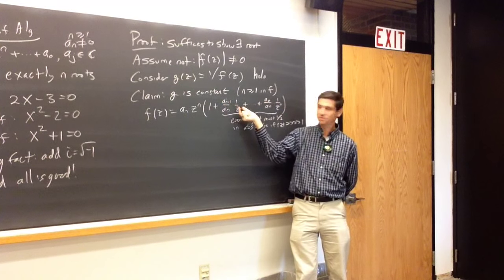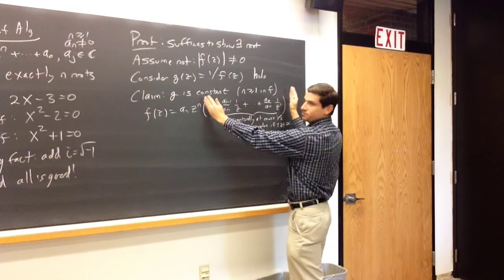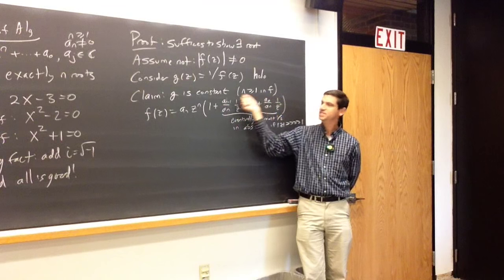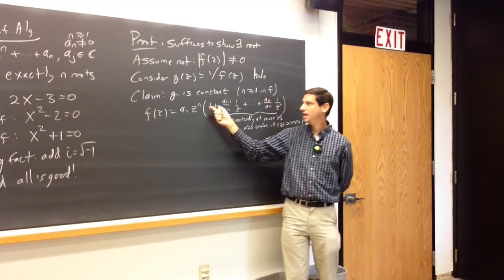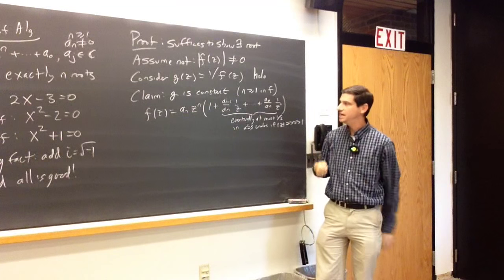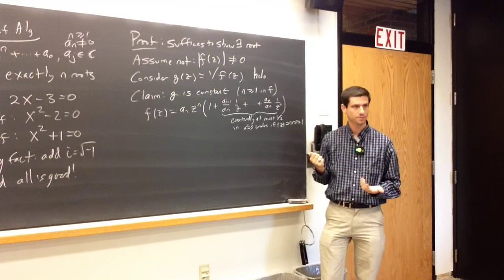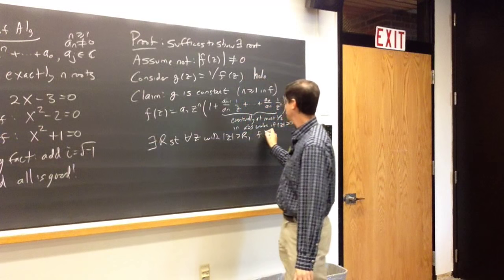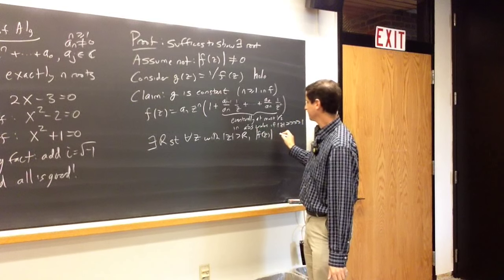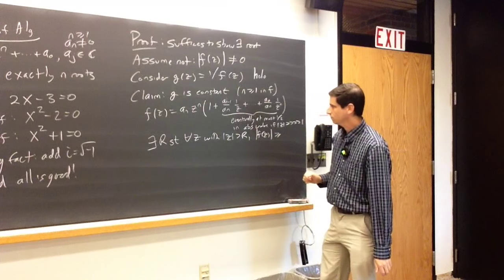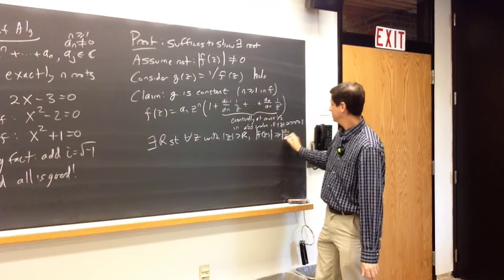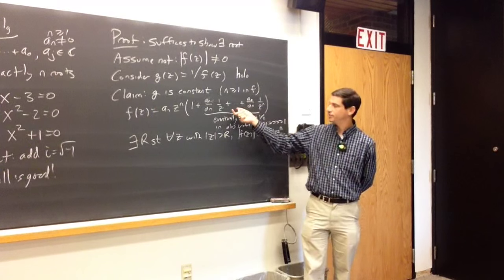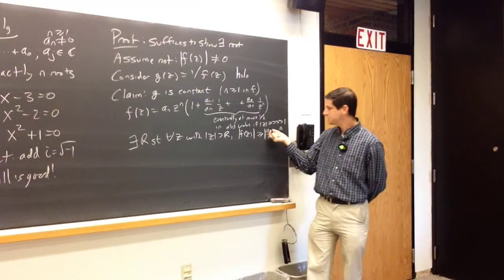As you take z larger and larger, all of the remaining terms are eventually at most one-half in absolute value if the absolute value of z is huge, because those numbers are fixed and I'm dividing by higher and higher powers of z. By the triangle inequality, the absolute value of the sum is at most the sum of the absolute values. Worst case scenario, this whole thing is negative one-half — we'd then have 1 minus 1/2, which is still positive. So as z gets very large, f of z goes to infinity in absolute value.